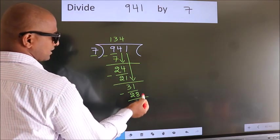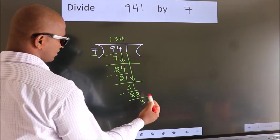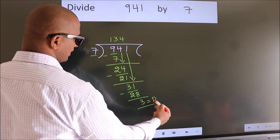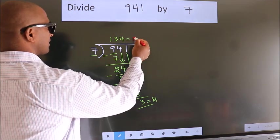No more numbers to bring down. So we stop here. This is our remainder. This is our quotient.